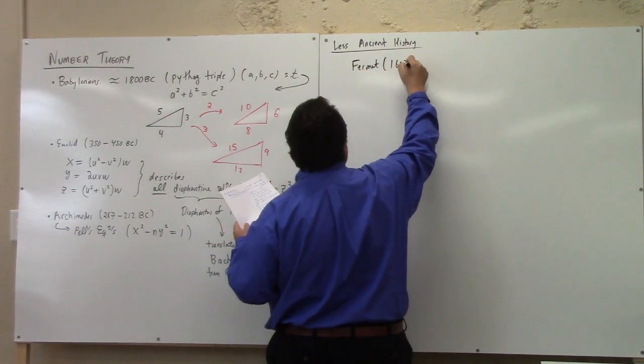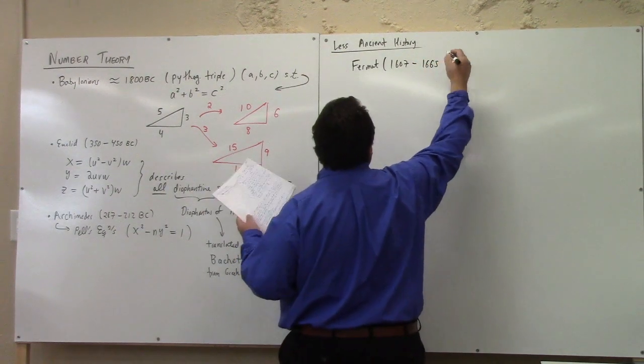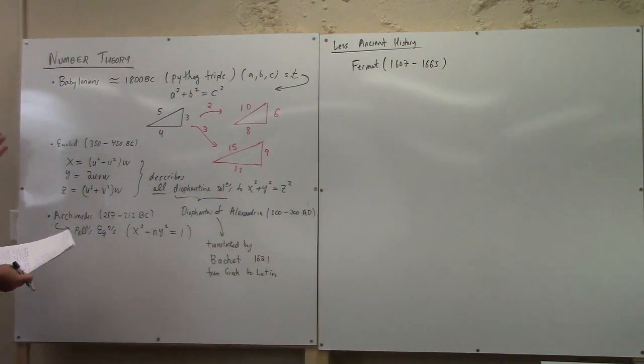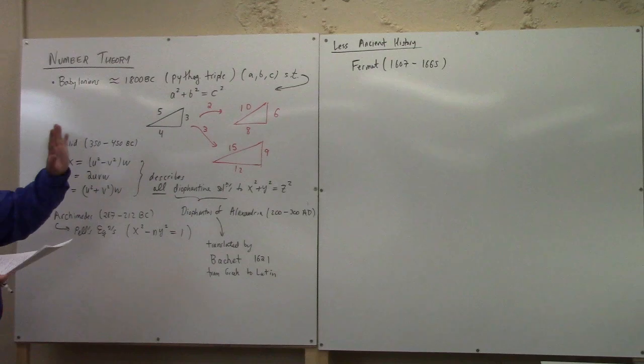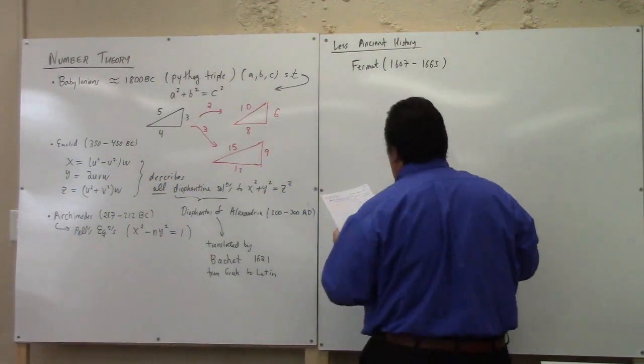So less ancient history. Fermat, we're talking 1607 to 1655. Obviously AD. There's a little bit of a jump there, isn't there? Apparently nothing happened from 300 AD all the way to 1607. There is other things that happened, like algebra. Some of the Arab mathematicians did a lot with algebra during that time frame and other things. But this is where the story of number theory, as it's commonly studied, picks up again.